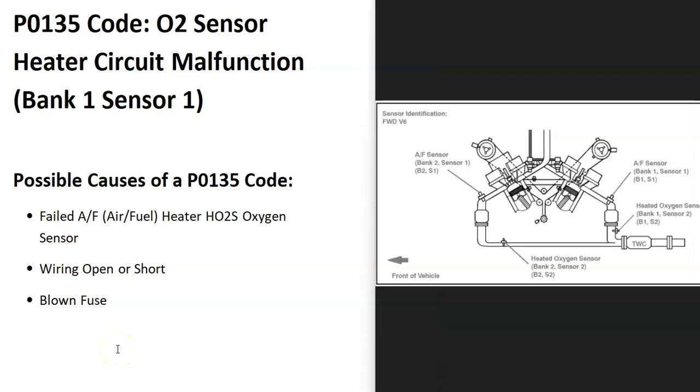In V6 and V8 engines, they have two banks, and bank one is always the side of the engine with the number one cylinder. So if you find the number one cylinder, that's going to be bank one, and then sensor one will be the second sensor going down on the exhaust on that side.